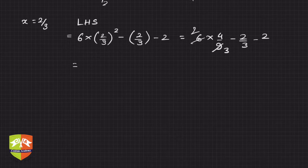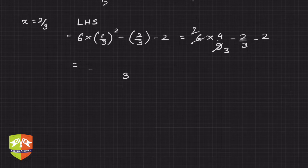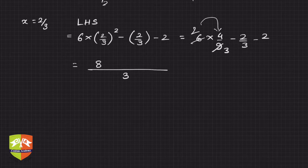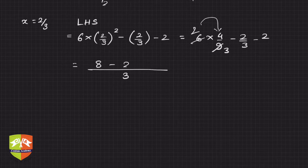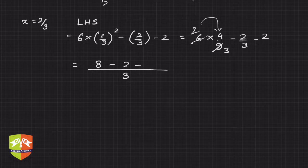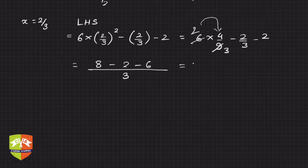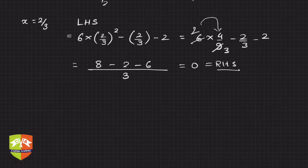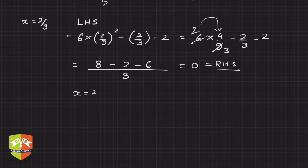The LCM will be 3. In the numerator, it will be 2 × 4, so 8 - 2 - 6, which comes out to be 0 again, equal to RHS.